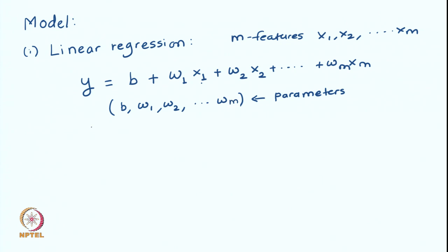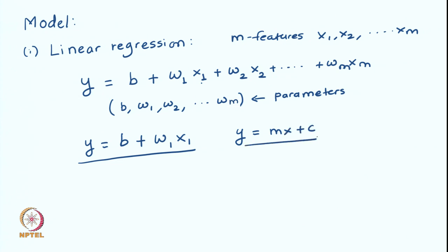So we have a setting where we have m features and we come up with a very simple mapping between features and the label, and we hypothesize that there is a linear relationship. Geometrically this represents an equation of a hyperplane. Let us try to understand this with respect to a single feature just to build an intuition about linear regression. If we have a single feature, we have a very simple model: y = b + w1*x1. This is a familiar equation — we studied this in high school, very similar to y = mx + c, which is the equation of a line. There are two parameters: b and w1. b is called the bias, which is really the y-intercept, and w1 is the slope of the line.